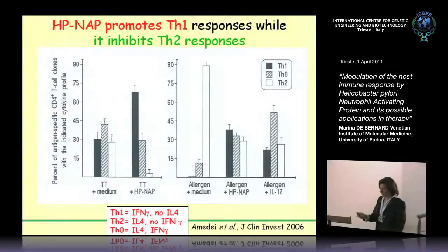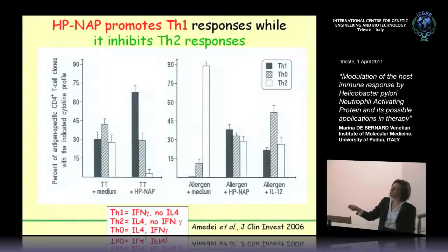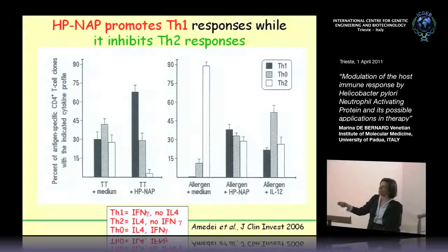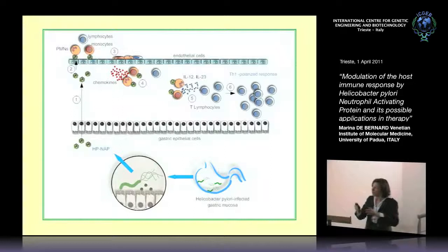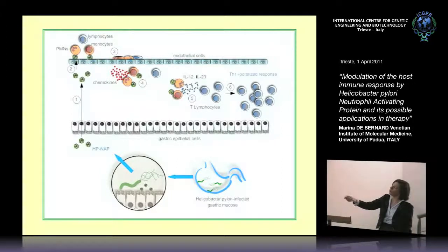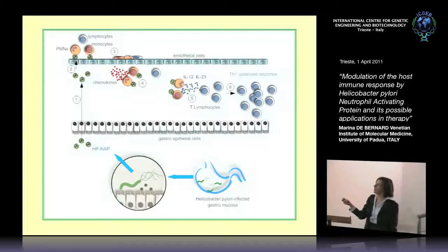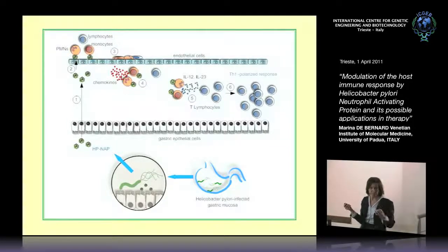Similarly, we obtained the same results when we used T cells isolated from tetanus toxoid vaccinated subjects. In this case there is more equilibrium among the kinds of Th cells, but also in this case, when we administered HPNAP to our cultures, we observed an increase of the Th1 population. Therefore, not only does HPNAP sustain inflammation, but it can also drive the differentiation of recruited T cells towards the Th1 phenotype, which is the most represented subtype in the mucosa of H. pylori infected patients.